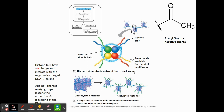Histone tails have a positive charge, and DNA has a negative charge, so they attract each other and clump together tightly. Acetyl groups also have a positive charge, which negates the negative charge on DNA and lessens the attraction between histones and DNA, spreading it out. So methyl groups cause chromatin to condense, and acetyl groups cause chromatin to open up. You'll see more acetyl groups in euchromatin and more methyl groups in heterochromatin.